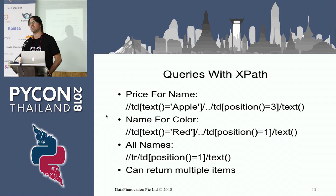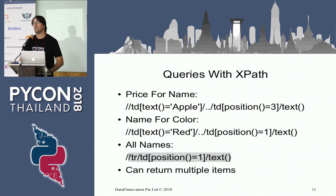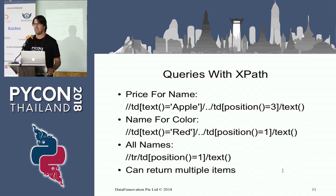How would we run some queries on that using XPath? We're looking for a price given a name — we match the row element, the data element with the text 'apple', and this grabs back out the third element on that row using the position() index helper function. We can do similar stuff to pull out names for colors. We can pull out all the names. These are things that in whatever format you had this data in Python built-ins, you'd be doing some nesting, some recursion. Here, this is just an explicit query to pull that thing out.